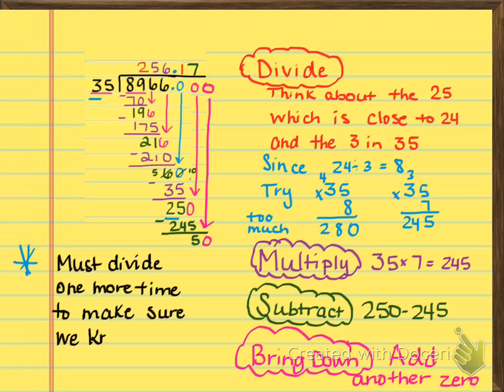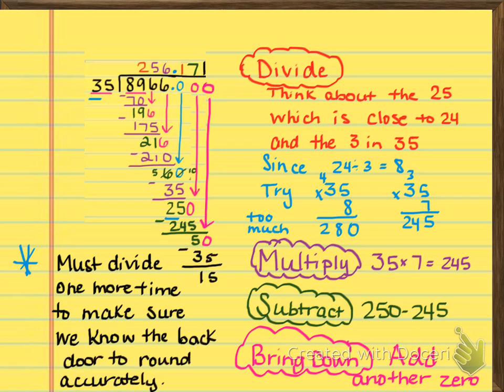Now, I put a little note here off to the side that you can see coming up. It says, must divide one more time to make sure we know the back door to round accurately. So what that means is, even though we only need that 7, that's where we're rounding the 7's place, we need to know what's behind the 7 so that we know if the 7 stays a 7 or if it becomes an 8, just like we talked about when we were talking about rounding decimals. So when we add that extra problem, when we do the division one more time, we get a 1 there. So now we know our final answer. All right. So I put another pencil on the page just to remind you that you should be writing all of these steps. You should be writing all the little side notes. And again, you're just going to write them this one time for this one problem so that you can refer back to this if you have any questions.